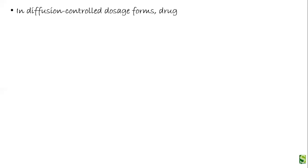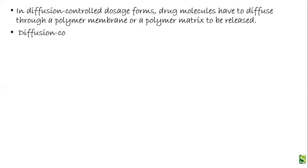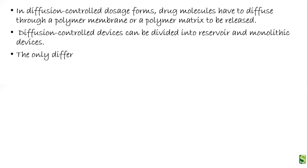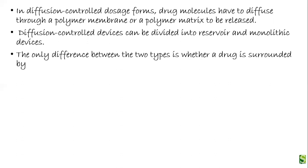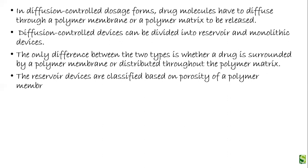In diffusion controlled dosage forms, drug molecules have to diffuse through a polymer membrane or a polymer matrix to be released. There are two types of diffusion controlled devices: the reservoir system and the monolithic system. In the reservoir system the drug is enclosed in a polymeric membrane, whereas in the monolithic or polymeric matrix system the drug is dispersed into the polymeric matrix. The only difference between the two types is whether the drug is surrounded by a polymer membrane or distributed through the polymer matrix.